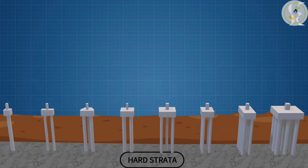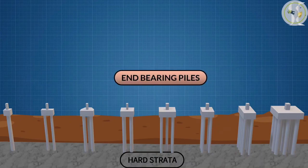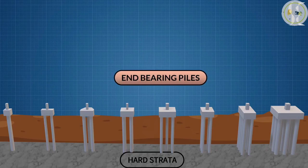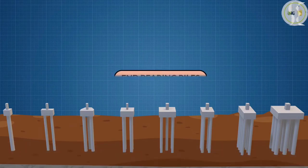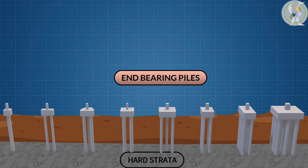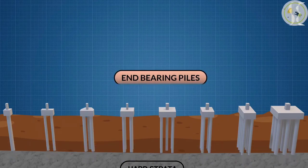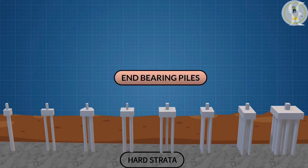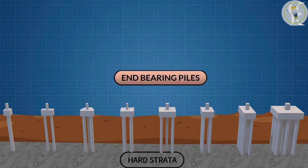End-bearing piles are piles that rely on the resistance of the soil or rock at the tip of the pile to support the load. They are usually driven or bored into the ground until they reach a hard layer, such as bedrock or dense sand. End-bearing piles are suitable for sites where there is a clear and strong bearing layer at a reasonable depth and where the upper layers are not too soft or compressible.